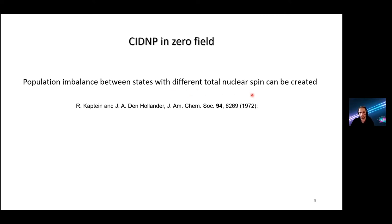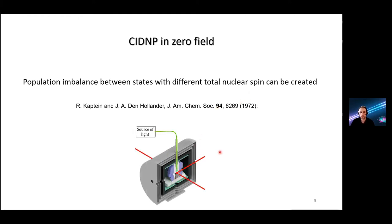Robert Kaptein and Don Horrocks came up with a very thoughtful theoretical model explaining the field dependence of CIDNP back in early 70s. For us the main conclusion is that population imbalance between states with different total nuclear spin can be created by CIDNP.